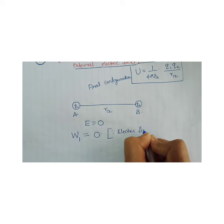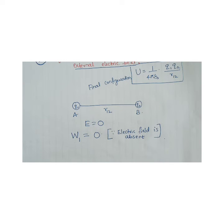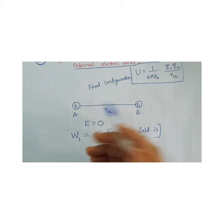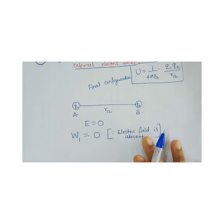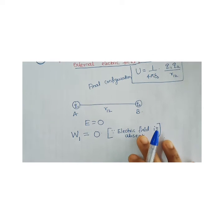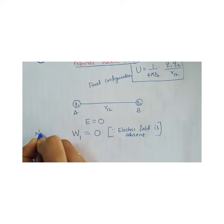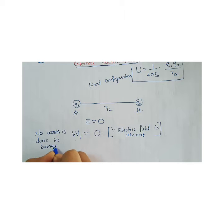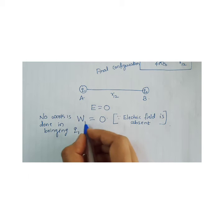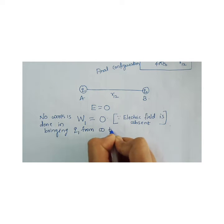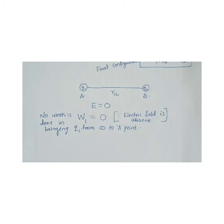Why is W1 = 0? Because the electric field is absent. If there is no electric field, no work is done against anything — no external force needs to be applied. So the charge can be brought easily to position A. Therefore, no work is done in bringing Q1 from infinity to point A. Now let B be the position of Q2.